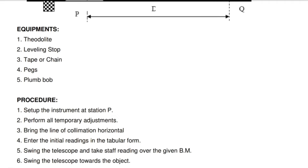1. Set up the instrument at station P. 2. Perform all temporary adjustments. 3. Bring the line of collimation horizontal. 4. Enter the initial reading in the tabular form.